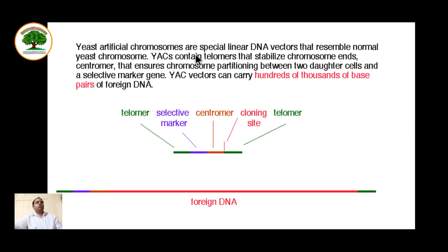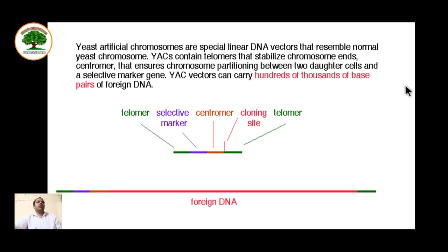Yeast artificial chromosomes are special linear DNA vectors that resemble normal yeast chromosomes. YAC contains telomeres that stabilize the chromosome ends, with telomeres present on both ends and the centromeric region at the center. The cloning site is just next to the centromeric gene. There are selectable markers present for both bacteria (E. coli) and yeast. The centromeric region ensures the chromosome is equally distributed between the two daughter cells. YAC may carry thousands or hundreds of thousands of base pairs of foreign DNA.